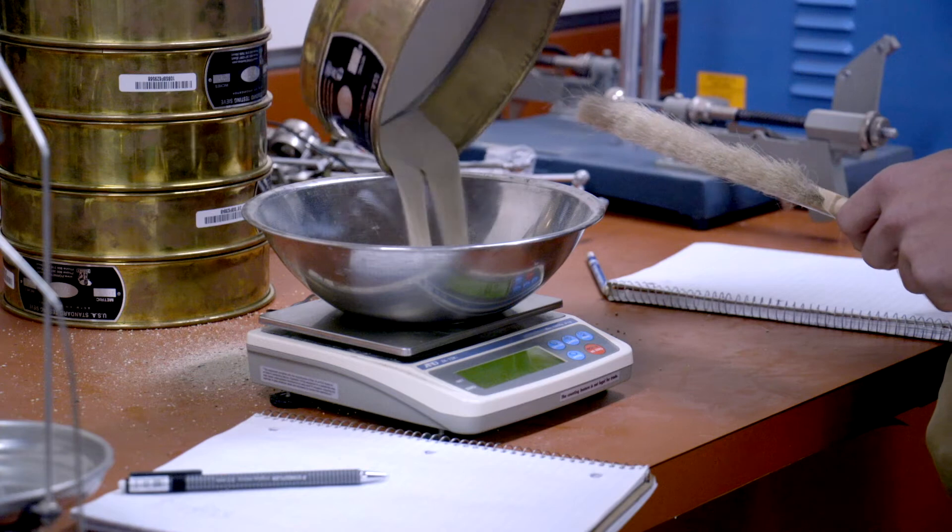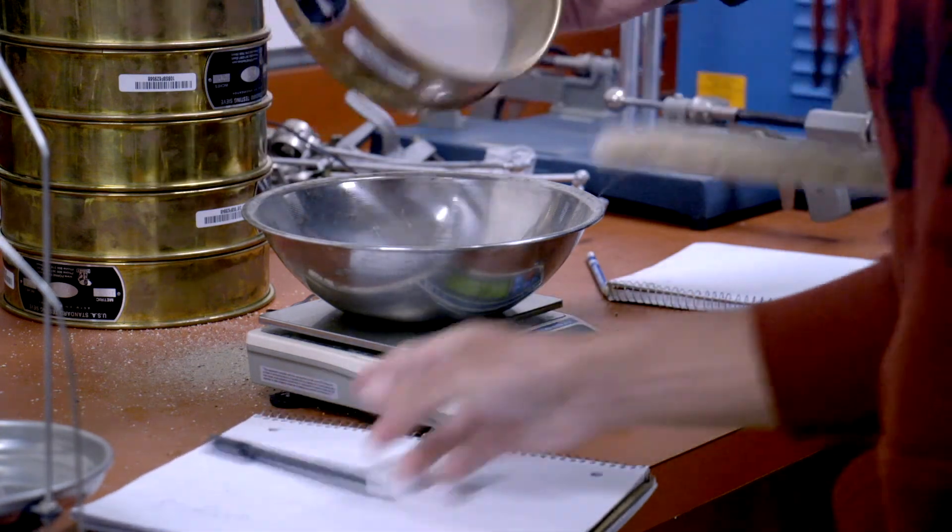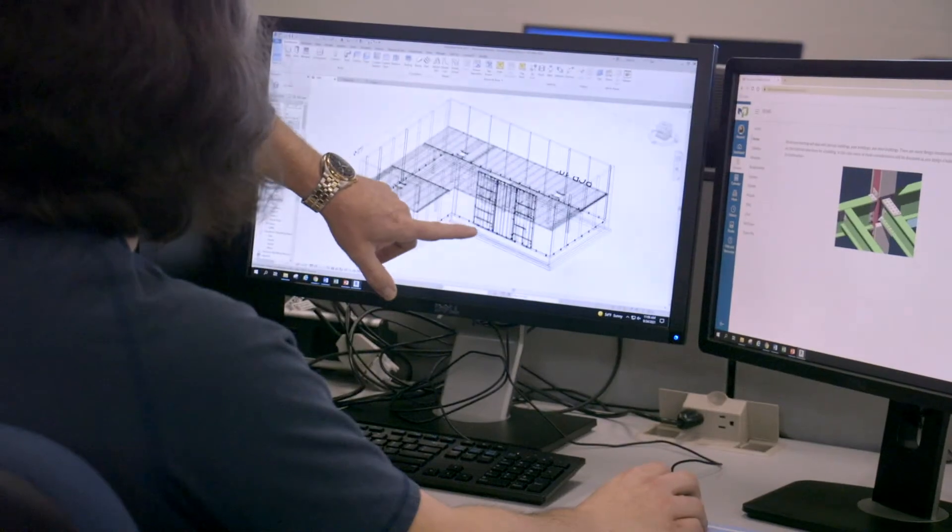It never ceases to amaze me where students end up after leaving this program. They're making anywhere from $40,000 to $50,000 a year. Most companies in this area, and we have a lot of employers that seek out our students, Excel Engineering, J.F. Ahern, Michael's Pipeline, MyTech.